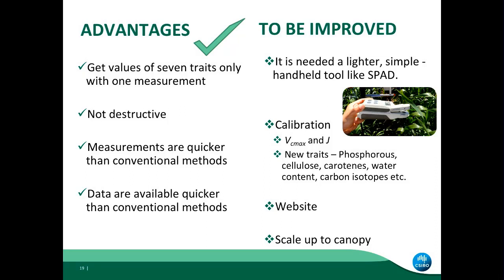However, it's not perfect yet, and it needs to be improved. My dream in a certain way is to have a simple but lighter tool to carry in the field — I'm still using my daughter's pram to carry the ASD because it's heavy when you try to measure a lot. Something lighter and quicker would be good. Calibrations — I'm still trying to improve the models, mainly for photosynthesis. I'd also like more traits — why not? One measurement that gives you also phosphorus, cellulose, carotenoids, water content, carbon isotopes. The website definitely needs work, and for that — talking about collaborations — software engineers or somebody who knows more than me in this sense to help.